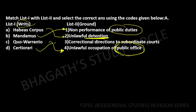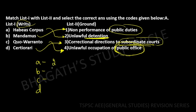Certiorari gives corrective direction to subordinate courts to check jurisdiction. The correct matching order is 3, 2, 1, 4 — Option 3 is the correct answer.